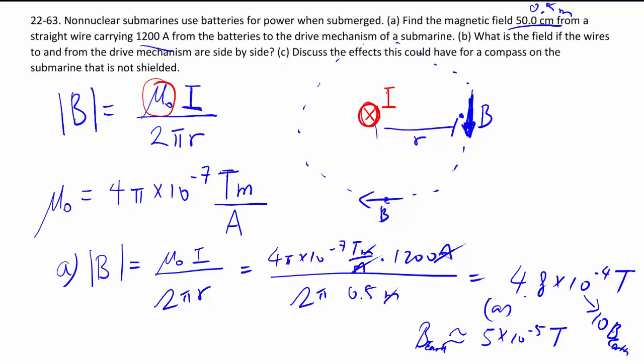So as you can imagine, this would strongly affect the compass that the submarine uses. So you need some kind of way to essentially cancel out this magnetic effect, or else the compass on your submarines won't work. And that's what part B is about.